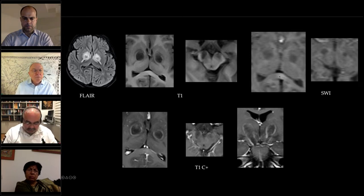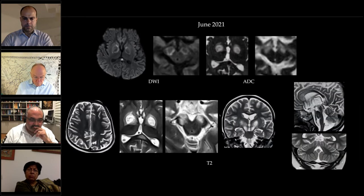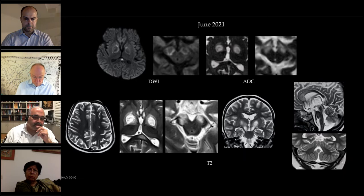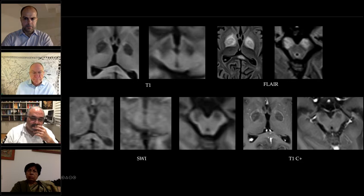SWI shows no areas of blooming. Post-contrast shows peripheral incomplete ring enhancement in the involved structures. Moving to June 2021: similar changes in the lentiform nuclei with an additional area of restricted diffusion in the splenium of the corpus callosum. There is brain atrophy, probably secondary to medication. The middle blade of the corpus callosum is more prominently involved — more confidently than in the previous case. FLAIR and T1 again show cavitating lesions. Post-contrast shows peripheral enhancement with no blooming or hemorrhage.